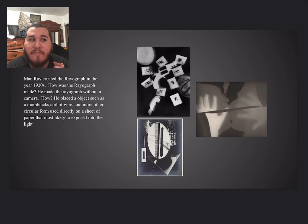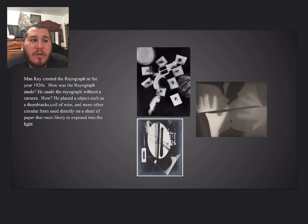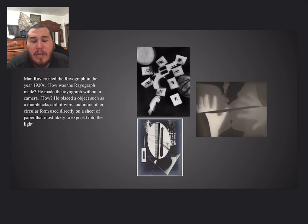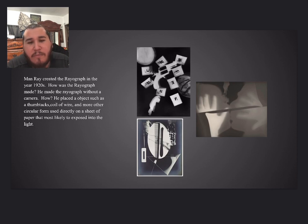Man Ray recreated the rayograph in the year 1920. How was the rayograph made? He made it without a camera — he placed objects such as thumbtacks, coils of wire, and other circular forms directly on a sheet of paper and exposed it to light. I just love these photographs; they show story, some violence, love, and just a hobby or something.